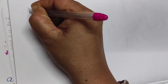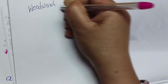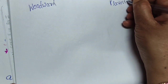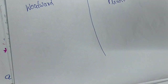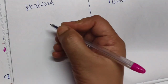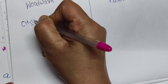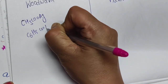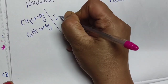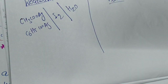So what is the Woodward and Prévost reagent? Generally, if we talk about the reagents, they are the combination of silver salts like silver acetate or silver benzoate along with iodine and water.